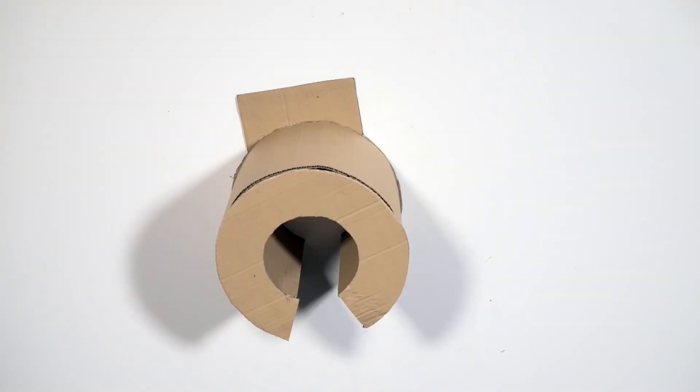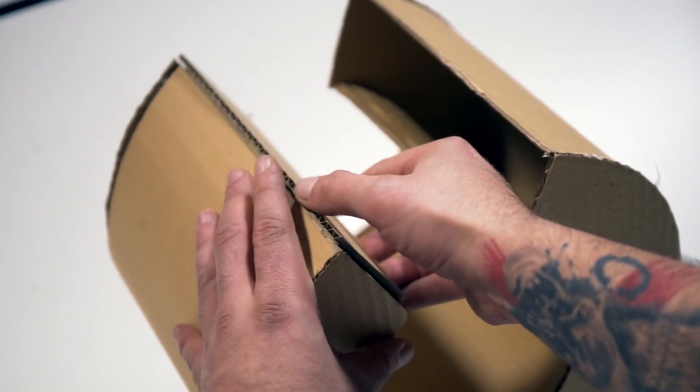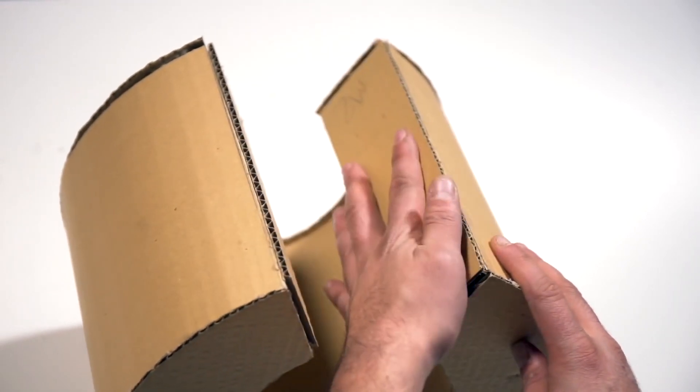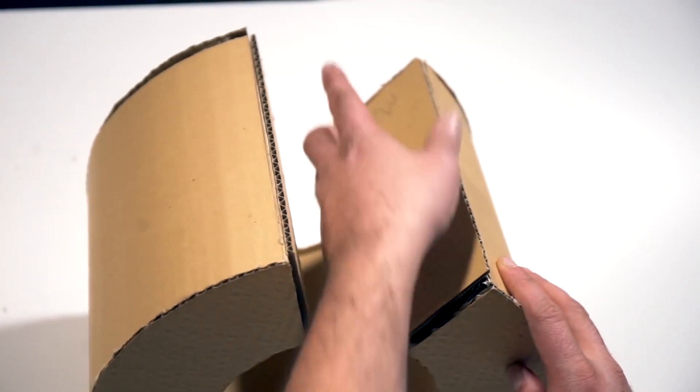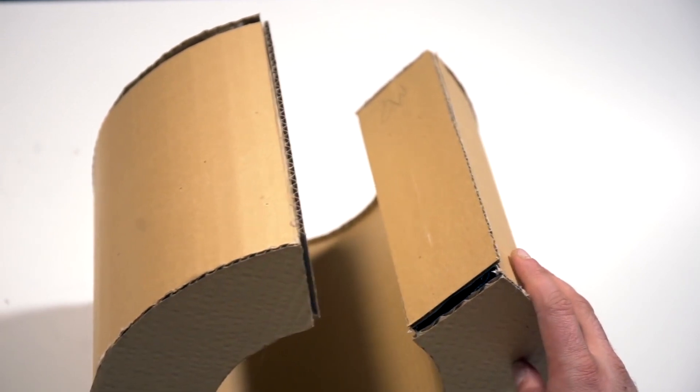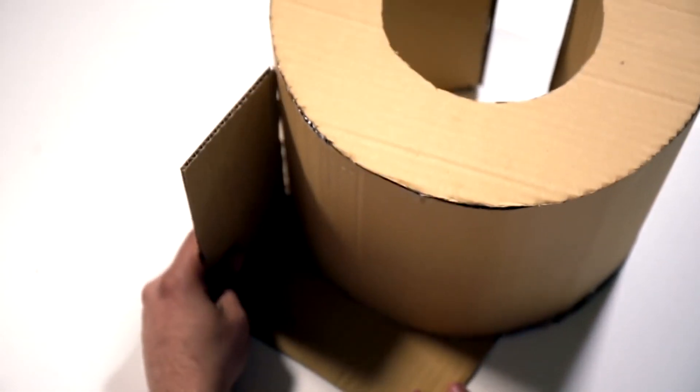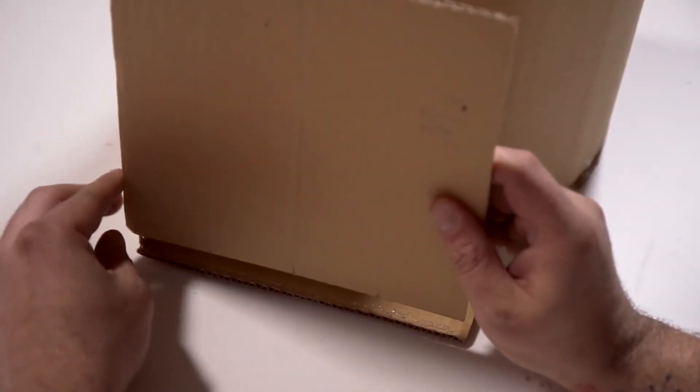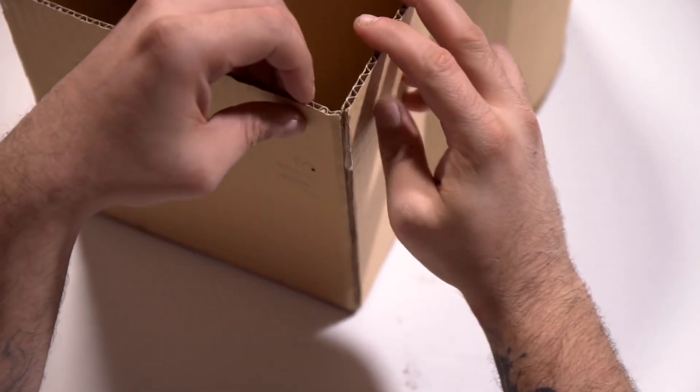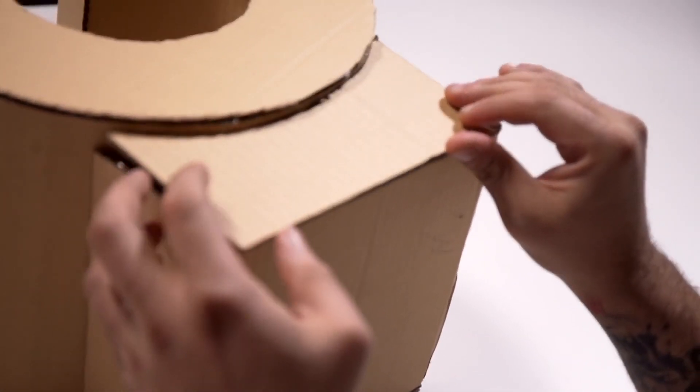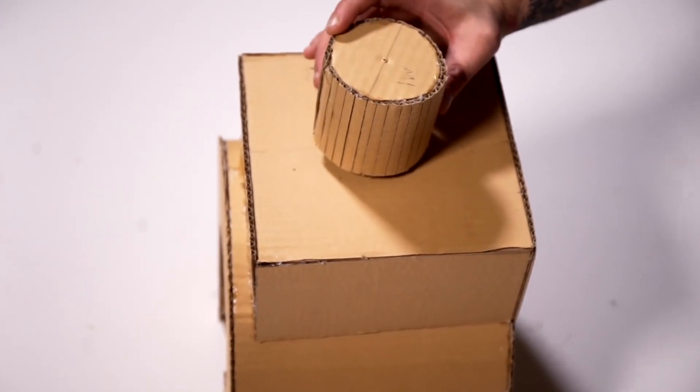Once all the pieces are cut out, assemble and glue them all together. Continue putting everything to form our Destiny's brother. Finally, put the cylinder on the top.